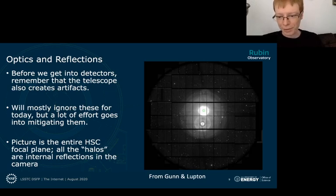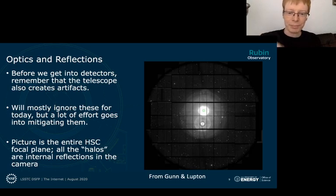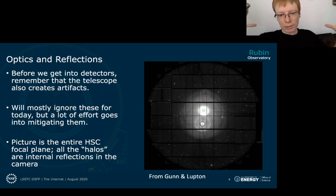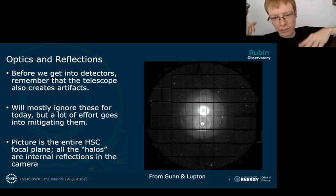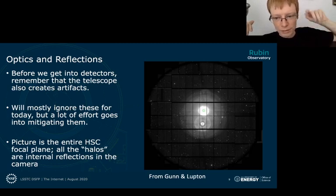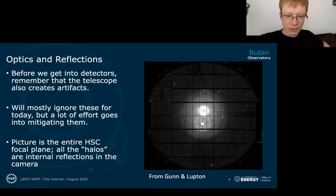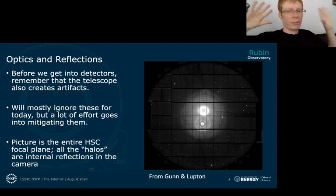There are a lot of optical artifacts as well. This is a super bright star observed with the Hyper Suprime-Cam. The star itself is a white dot with the big circles around it being halos — reflections inside the optics where light reflected off the CCD or other air-glass interfaces, came back down, and made a bigger out-of-focus donut on the sensor. I won't talk about these much, but light has to get to our sensors first, and sometimes there are problems there.